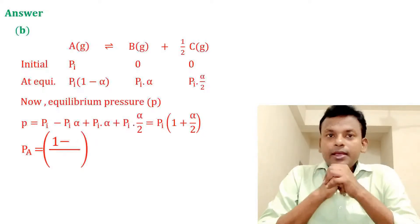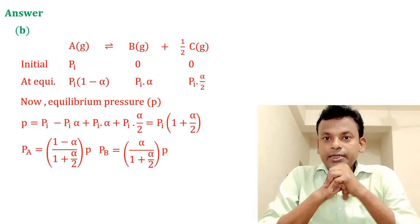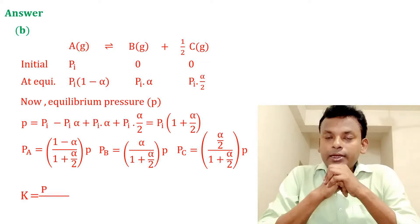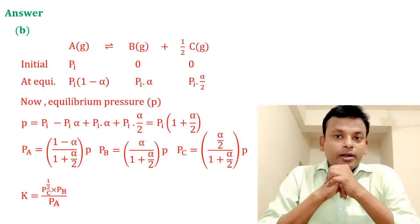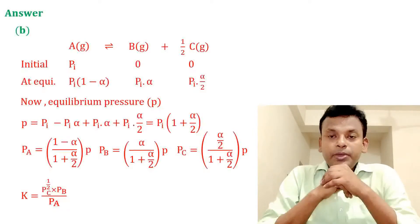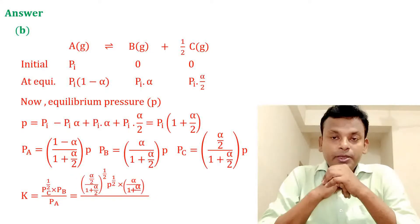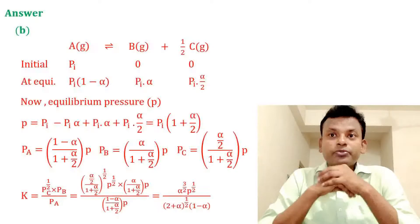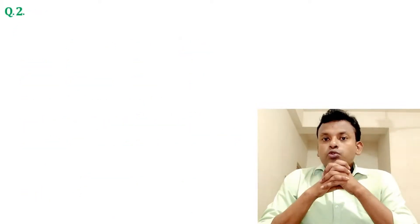Pa, Pb, and Pc are derived from the partial pressures. We know that Kp equals Pc to the power half times Pb divided by Pa. Putting in all values of Pa, Pb, and Pc, the final result gives option B as the correct answer.